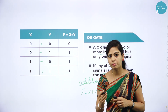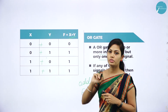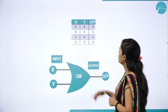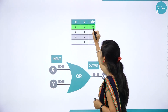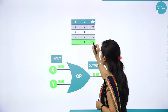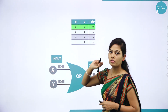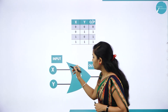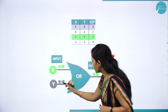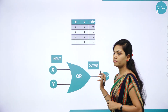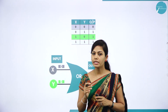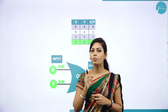OR gate has two or more inputs and produces only one output. In OR gate we use logical addition: 0 + 0 = 0; 0 + 1 = 1; 1 + 0 = 1; 1 + 1 = 1. This is the truth table and logic diagram for OR gate. OR gate has two or more inputs but only one output signal.